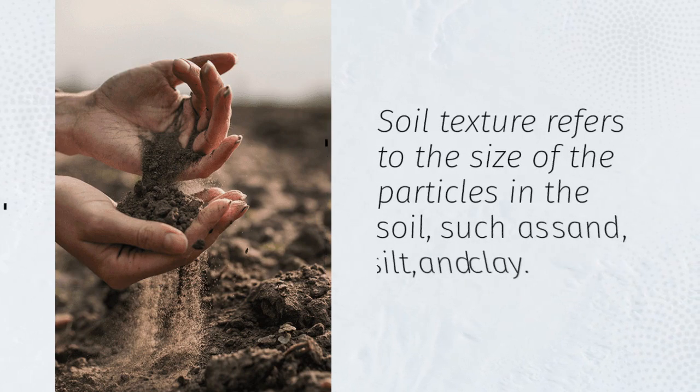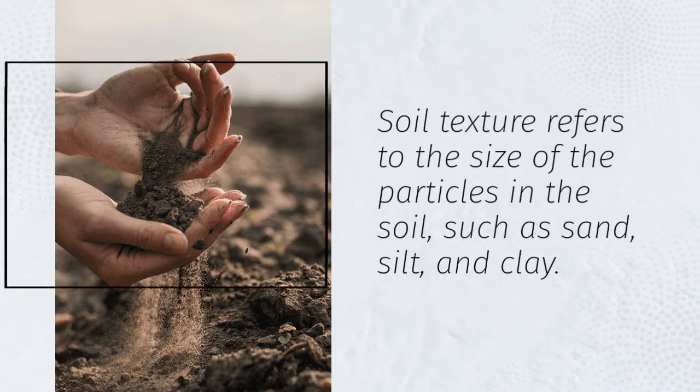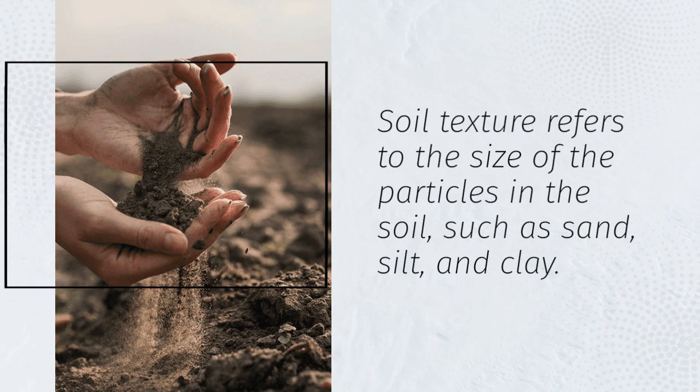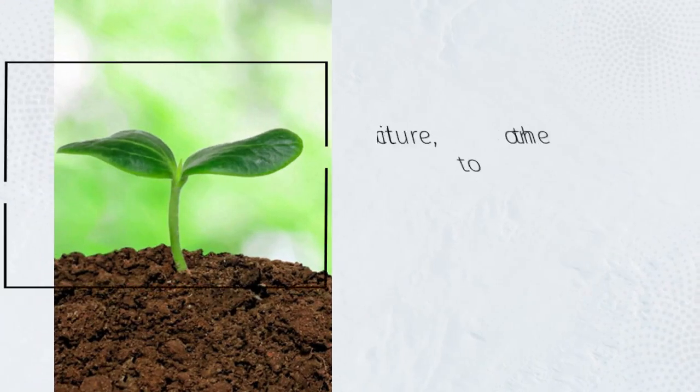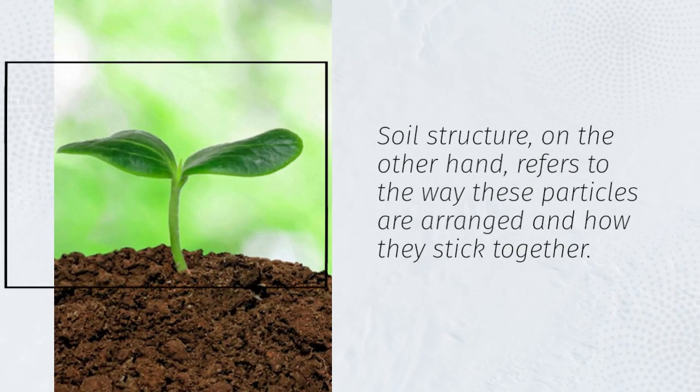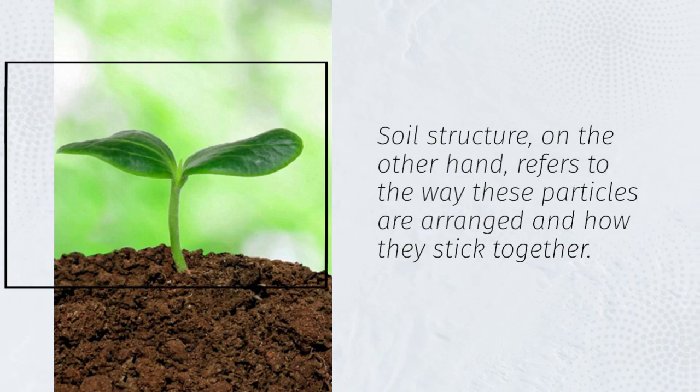Soil texture refers to the size of the particles in the soil, such as sand, silt, and clay. Soil structure, on the other hand, refers to the way these particles are arranged and how they stick together.